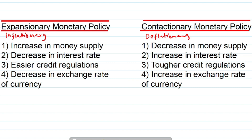If the central bank wants to increase or expand economic activity in the country and increase aggregate demand, it will increase money supply. When money supply increases, people have more funds for spending and investing. Since aggregate demand is C + I + G + X − M, if money supply increases, consumers will consume more and investors will invest more, so aggregate demand will increase. This causes economic growth but also inflation.